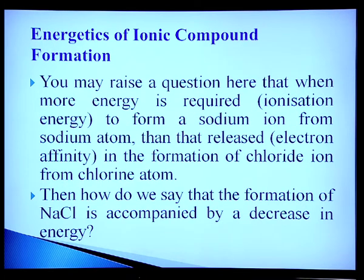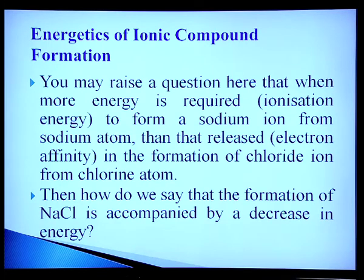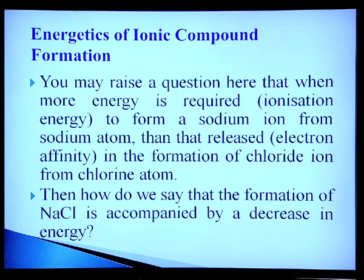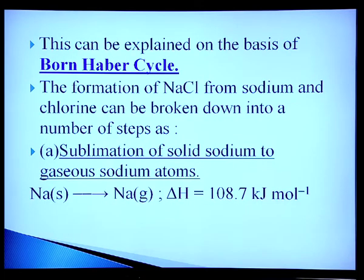Regarding the energetics of ionic compound formation, you may raise the question: when more energy is required to form a sodium ion from a sodium atom (ionization enthalpy) than that released in the formation of a chloride ion from a chlorine atom (electron gain enthalpy), how do we say that the formation of NaCl is accompanied by a decrease in energy? This can be explained on the basis of the Born-Haber cycle. The formation of sodium chloride from sodium and chlorine can be broken down into a number of steps.